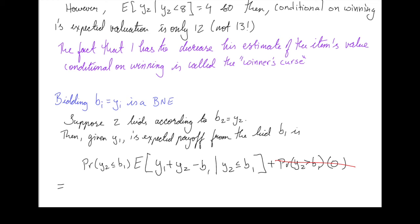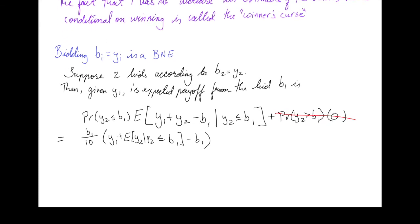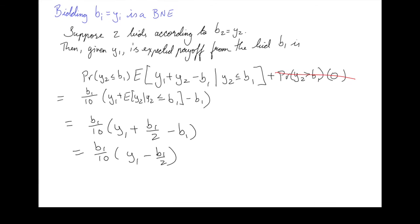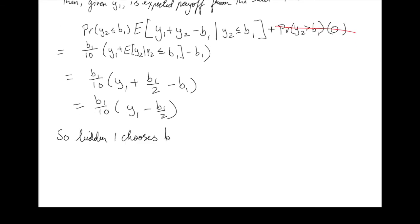Now, the probability that Y2 is less than or equal to B1 is B1 divided by 10. Y1 is a constant from the perspective of player 1, so the expectation of Y1 is just Y1, and B1 is also a constant. So we've got B1, so we're left with Y1 plus the expected value of Y2, conditional on Y2 less than or equal to B1. So conditional on Y2 being smaller than B1, the expectation of Y2 is B1 over 2. So we have B1 over 10 times Y1 plus B1 divided by 2 minus B1. Well, that's just B1 divided by 10 times Y1 minus B1 over 2.